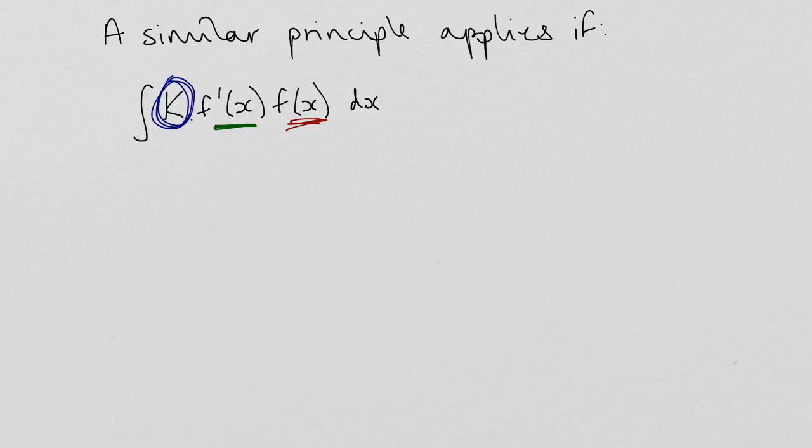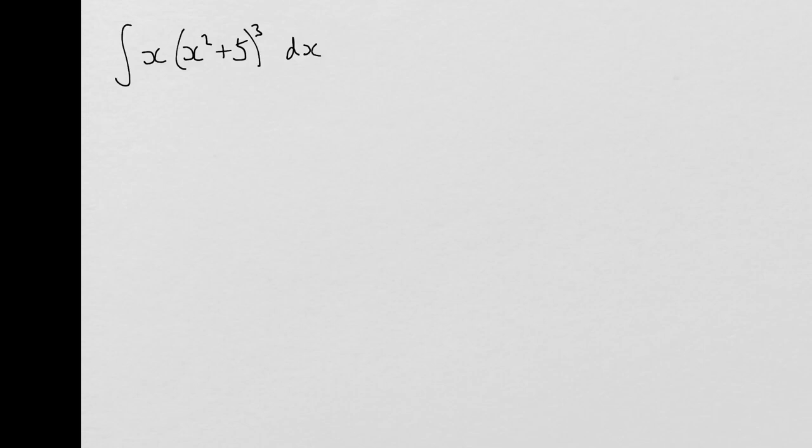Let's have a look at an example of this. It's reversing the chain rule. What you've got to consider is, does it look like the chain rule was applied? And if so, how are you going to undo that? What we need to think about here is what would have differentiated to give us that (x² + 5)³.